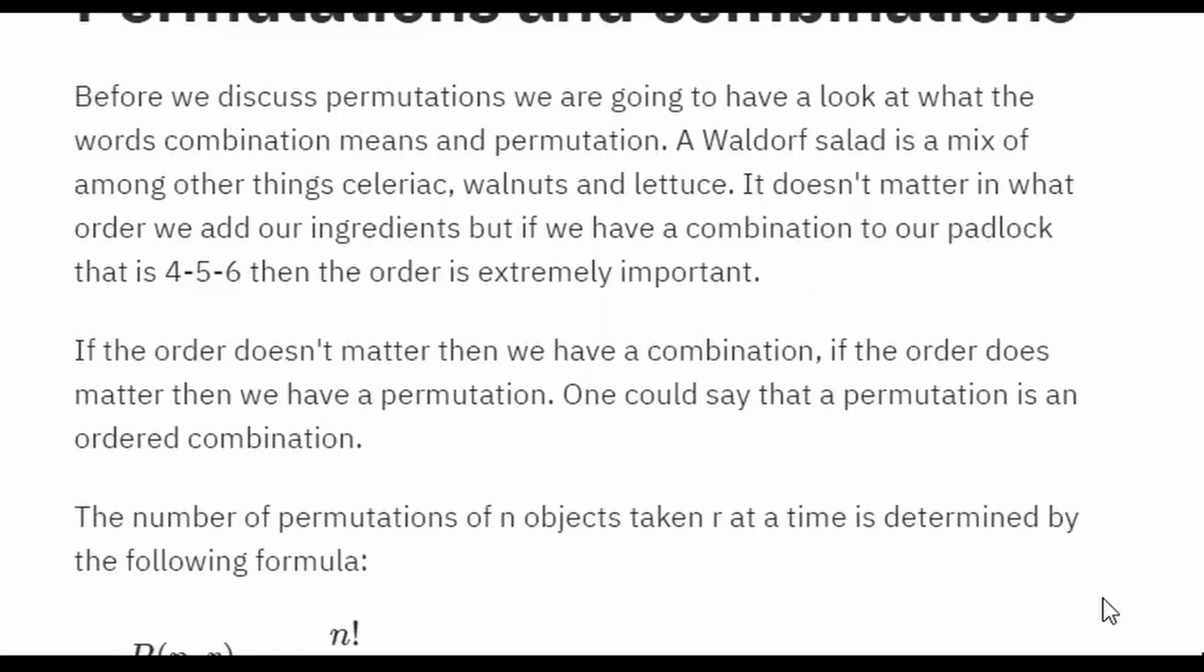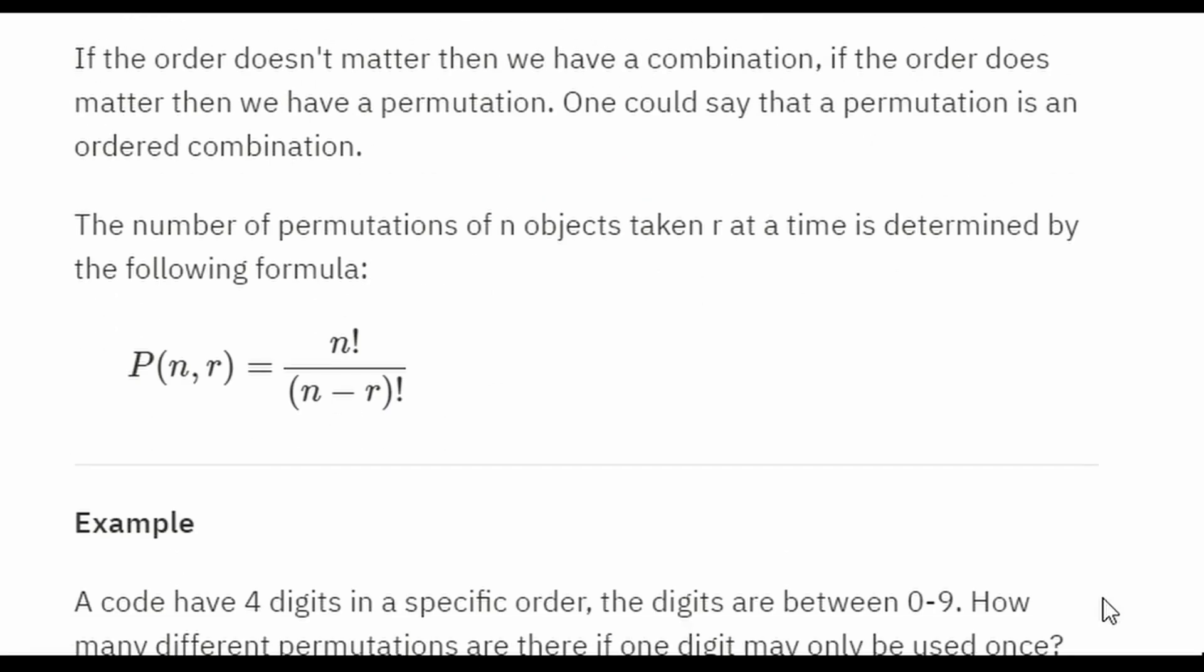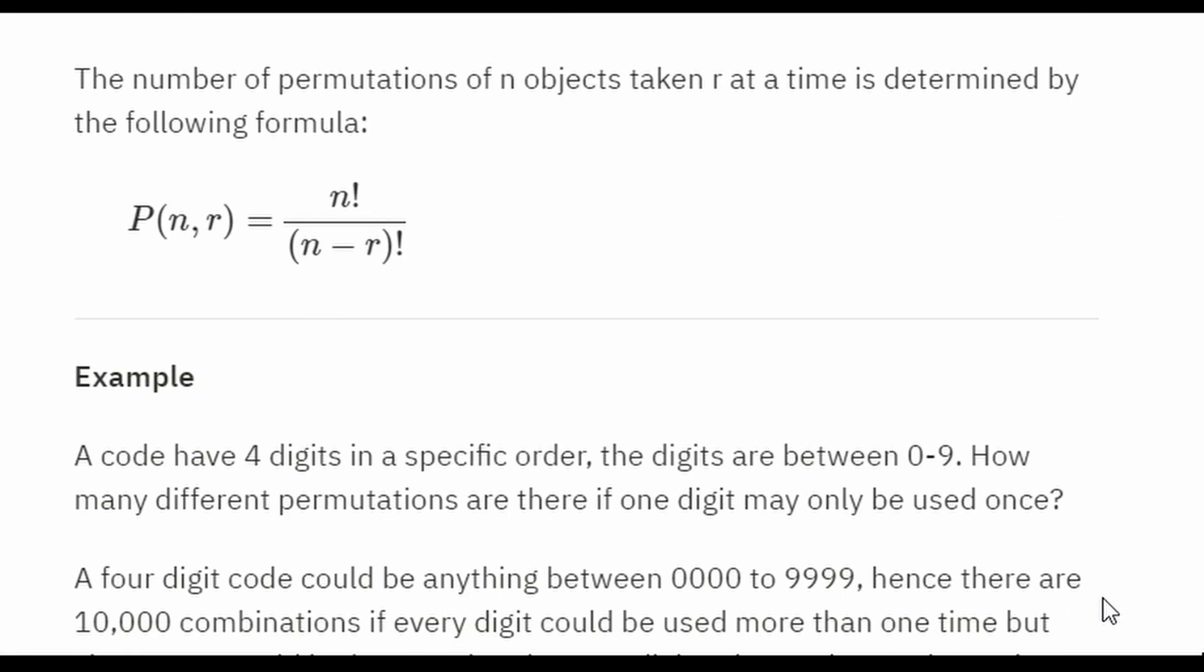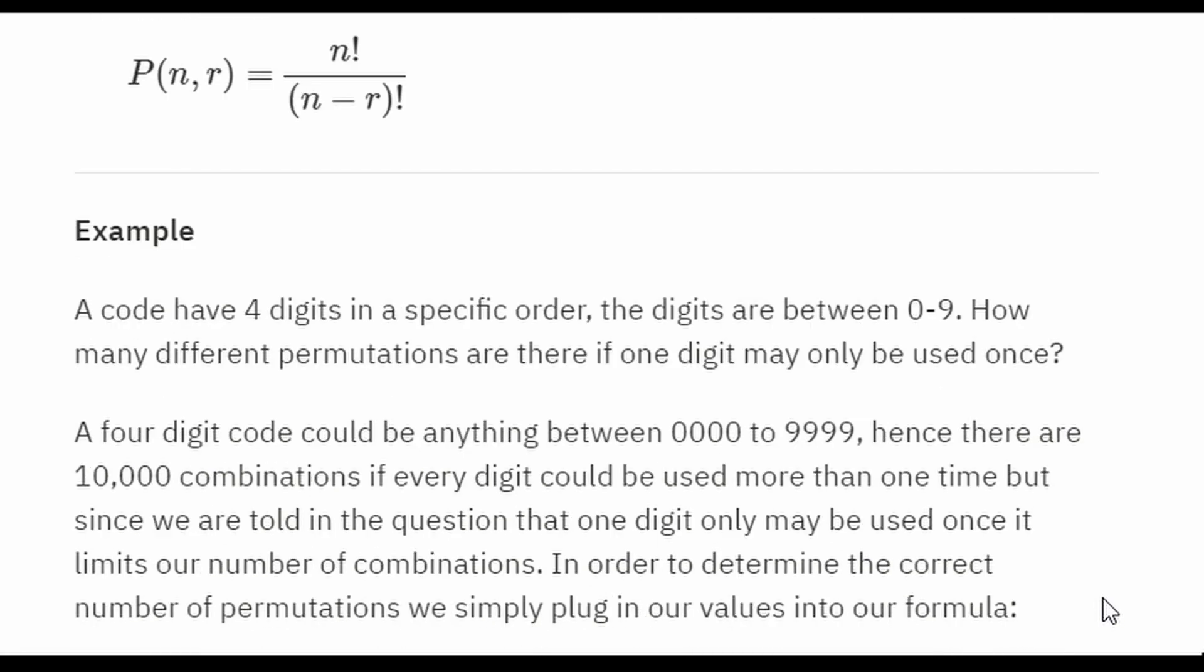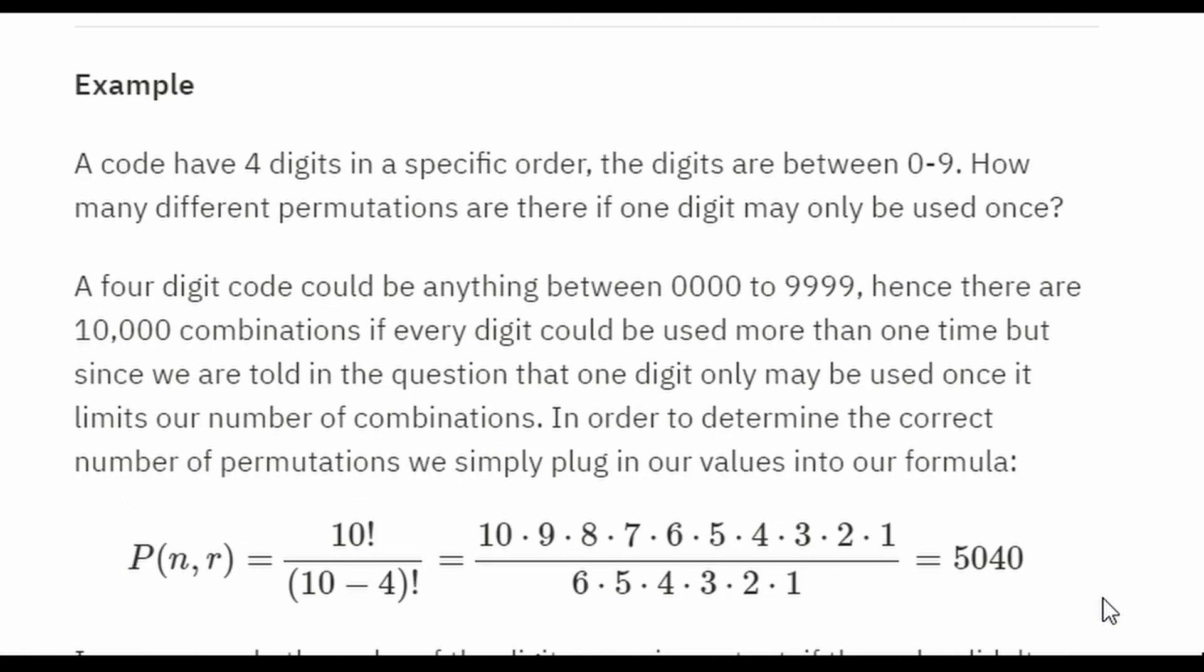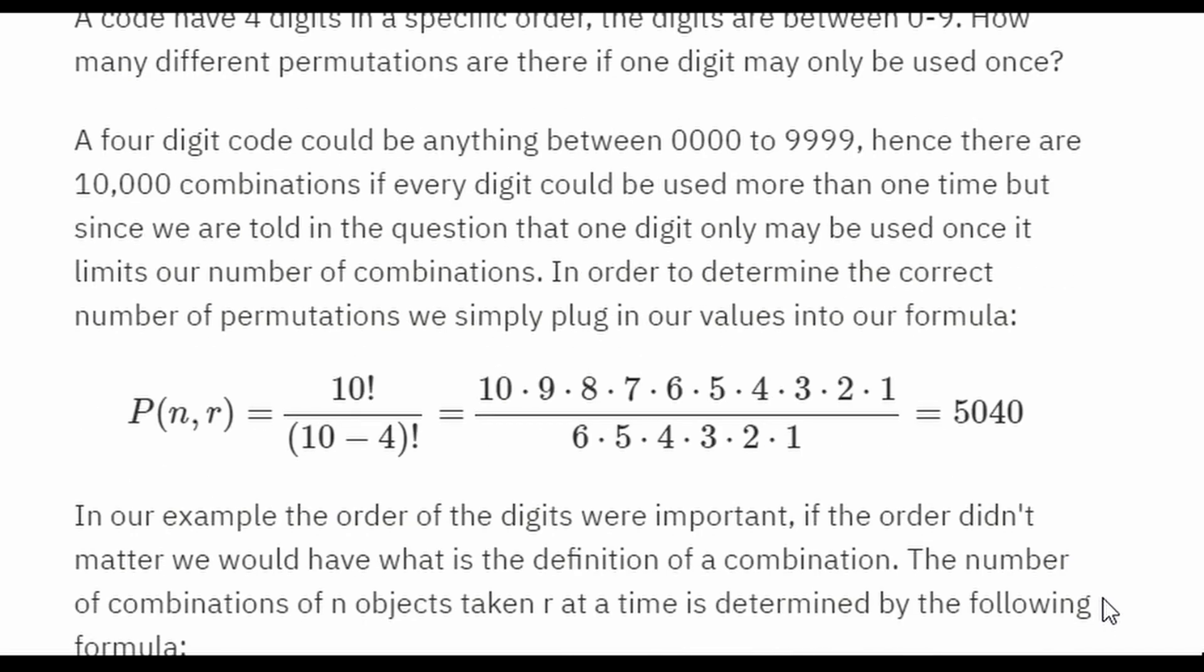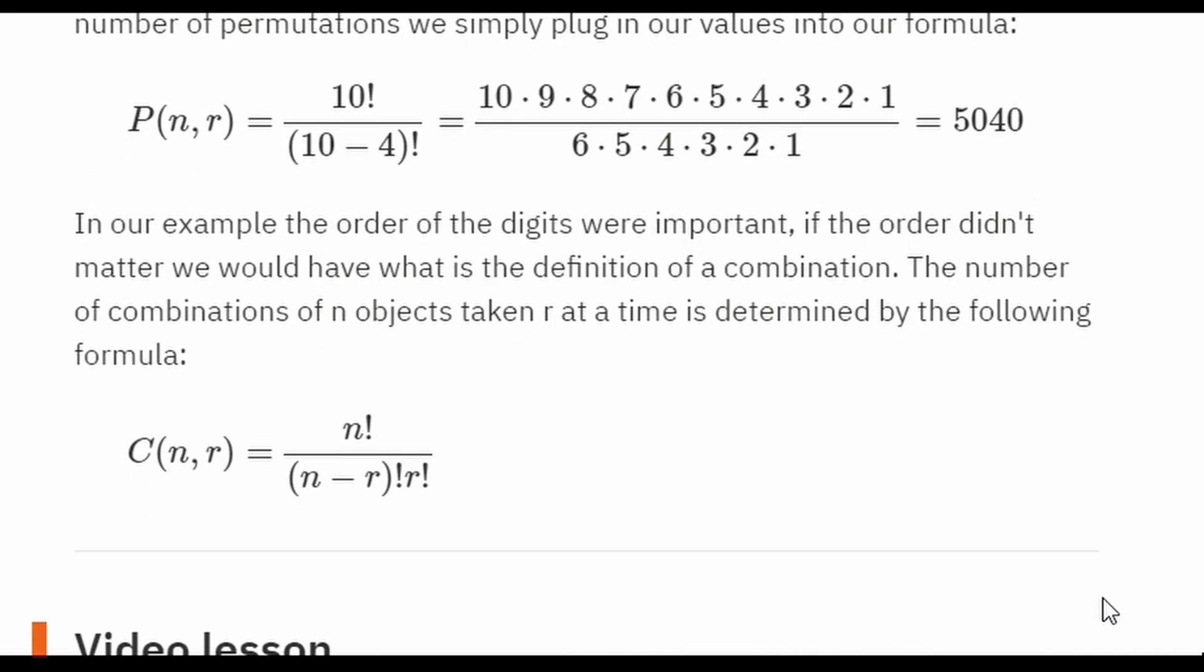So if you didn't know, a permutation is a combination with an order. What most people don't realize is that combinations don't have a specified order. A combination is more like a lottery ticket. It doesn't matter what order you put it in. If you get the numbers right, you win. Good job.